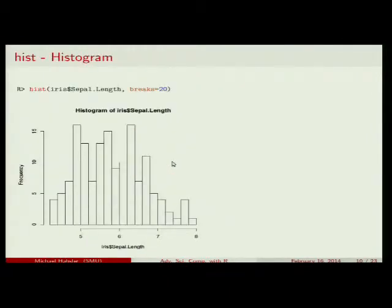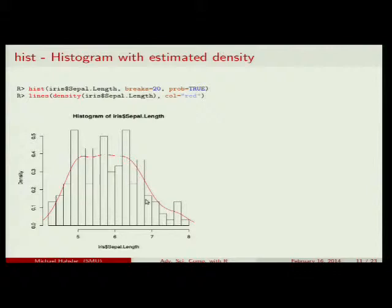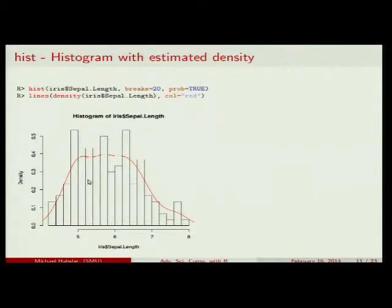Histograms — we looked at histograms. You say hist(), it's another high-level plot. You give it one variable and it will make a histogram. There's one important argument called breaks, which tells you into how many bins it breaks down your histogram. The histogram shows frequency or counts unless you say probability=TRUE, then it changes and shows you the density. Once you have a density, you can use a density estimate on the same variable and plot the estimated density — which is the estimate of the empirical density function — and it kind of smooths out the bars. I said I want the color to be red and I used the lines() function to draw this.